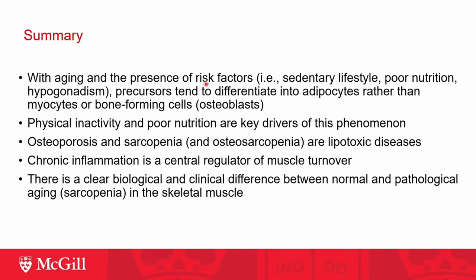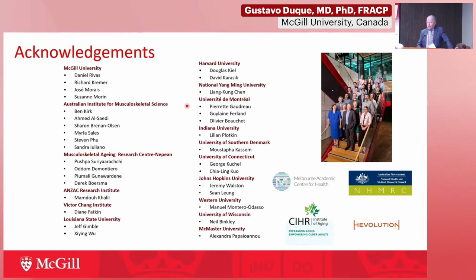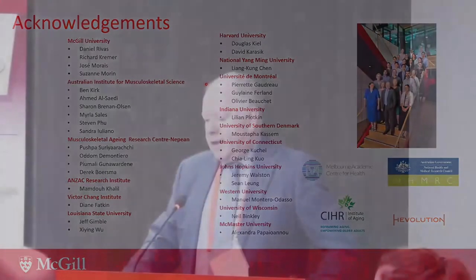In summary: with aging and the presence of risk factors such as poor nutrition and hypogonadism, there is higher differentiation into adipocytes instead of myocytes. Physical inactivity and poor nutrition are key drivers. Osteoporosis, sarcopenia, and osteosarcopenia are lipotoxic and chronic inflammatory diseases. There is a clear biological and clinical difference between normal and pathological aging from the muscle and bone perspective. I'd like to thank all our collaborators around the world who helped generate this evidence, and thank you very much for your invitation and for your questions.